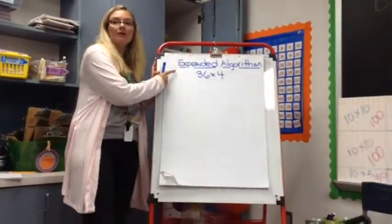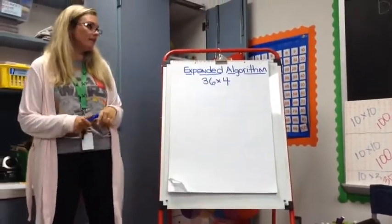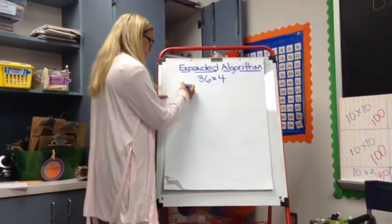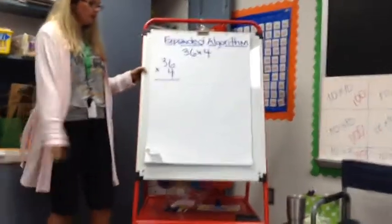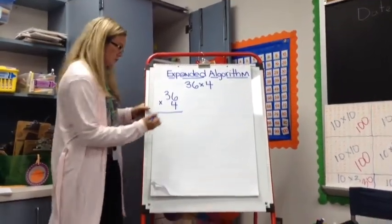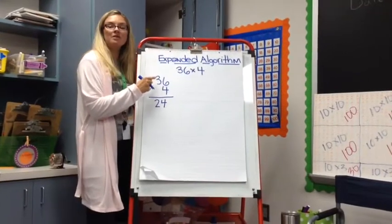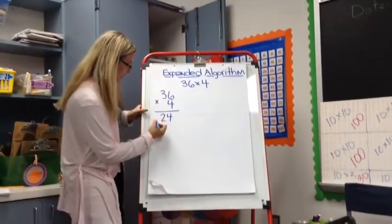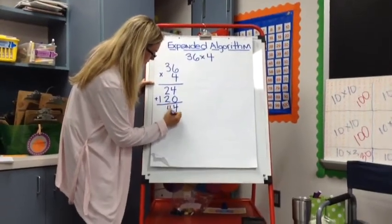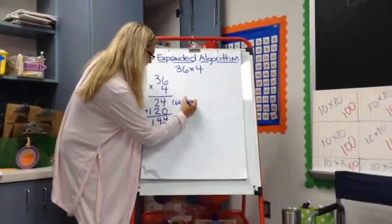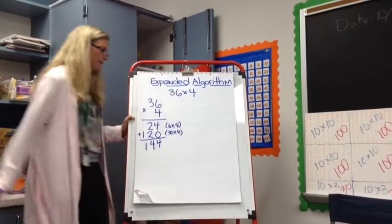Now I want you to think 'expanded algorithm' — expanded algorithm makes us think of expanded form. So 36 times 4: when we do the expanded algorithm, the first thing we do is 4 times 6, which is 24, and then we do 4 times 30, which is 120, and then you add them together. That's what we did last year — so this was just 6 times 4 and this was 30 times 4. Does everybody remember that?